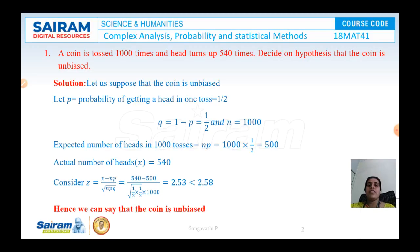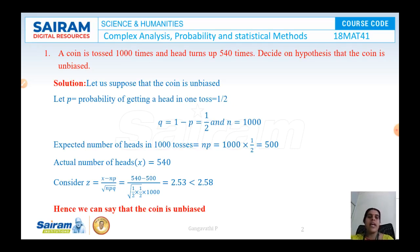Look at the first problem: a coin is tossed 1000 times and the head turns up 540 times. Decide on the hypothesis that the coin is unbiased. An unbiased coin is a fair coin with no manipulation — one side is head and the other side is tail. A biased coin means both sides have either head or tail.